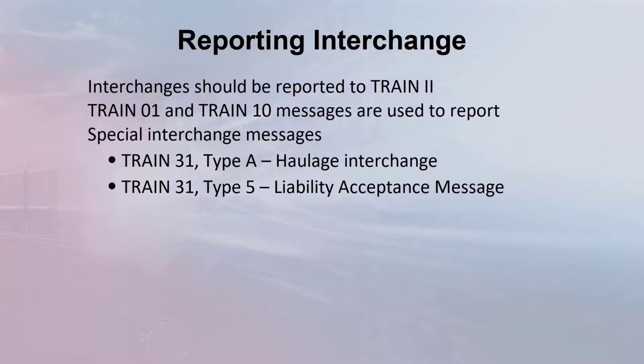Two special kinds of interchange can be reported using a TRAIN-31 message. TRAIN-31 type A can be used to report a haulage liability acceptance message. A liability acceptance message allows a carrier to accept liability for a car though LCS has assigned car hire liability to another carrier. These messages are comparatively rare. Reporting liability acceptance messages can also be accomplished through CAS by creating a LAM.